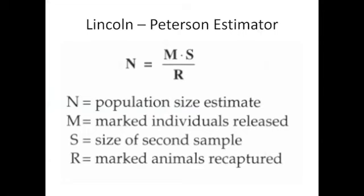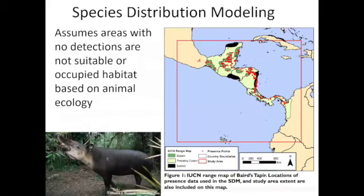The classic approach is the Lincoln-Petersen estimate: we do a survey, mark and release individuals, do a second survey, and divide the second sample size by the number of marked animals recaptured. This is the original formulation of capture-recapture modeling and how we estimate detection probabilities. Occupancy modeling is really just an extension of that capture-recapture process.